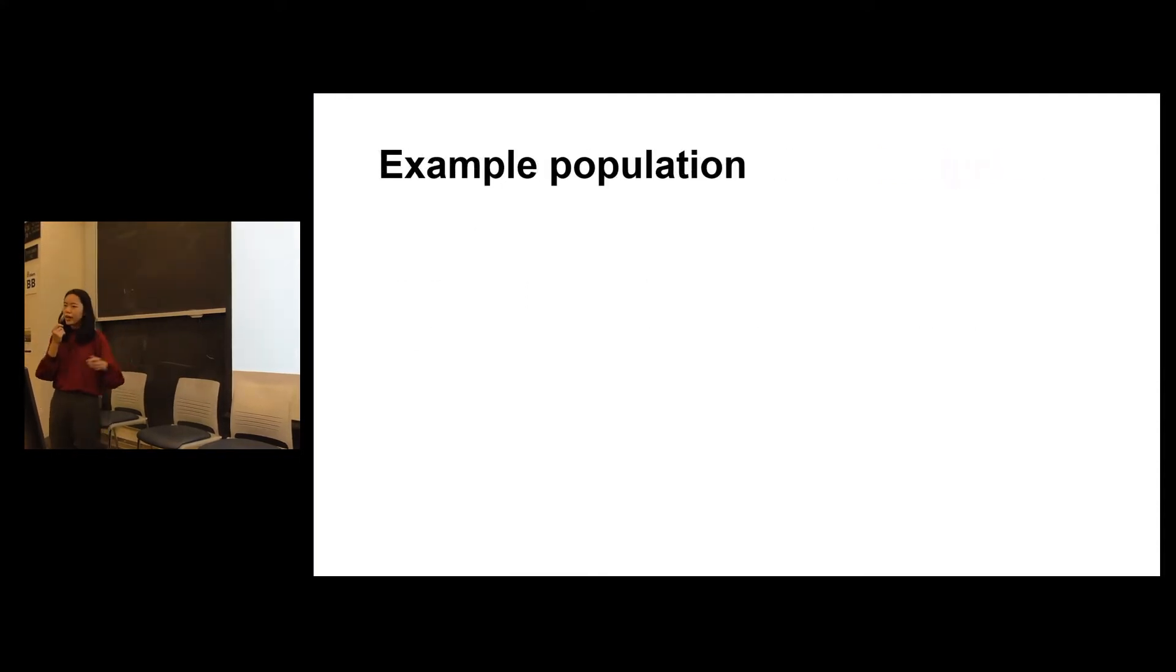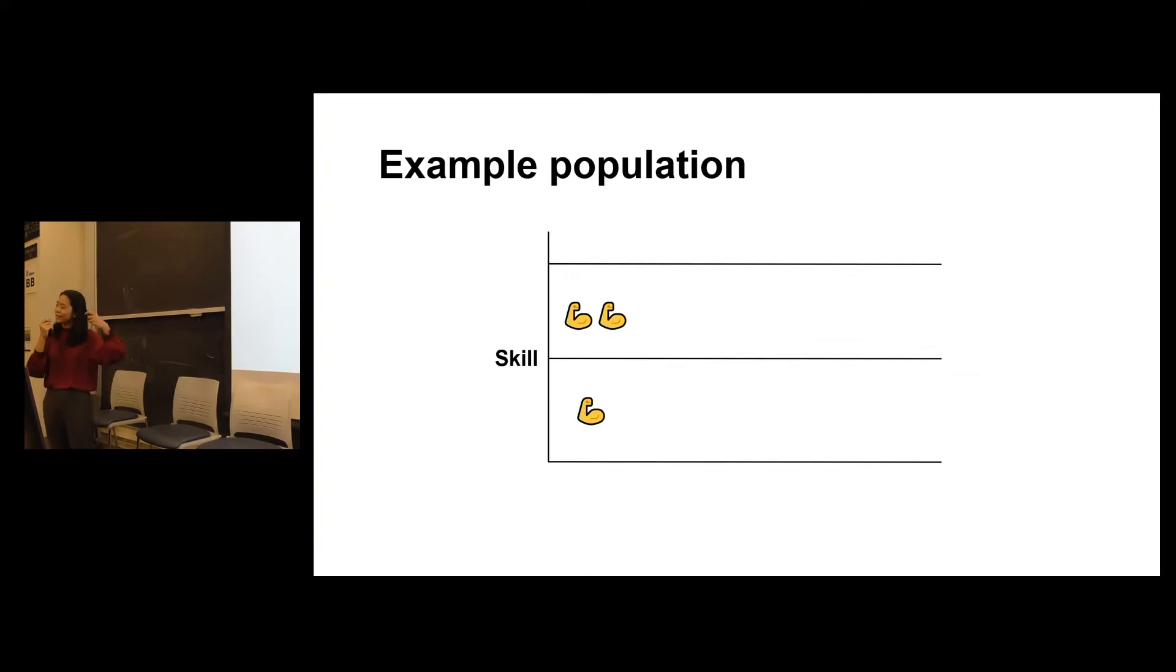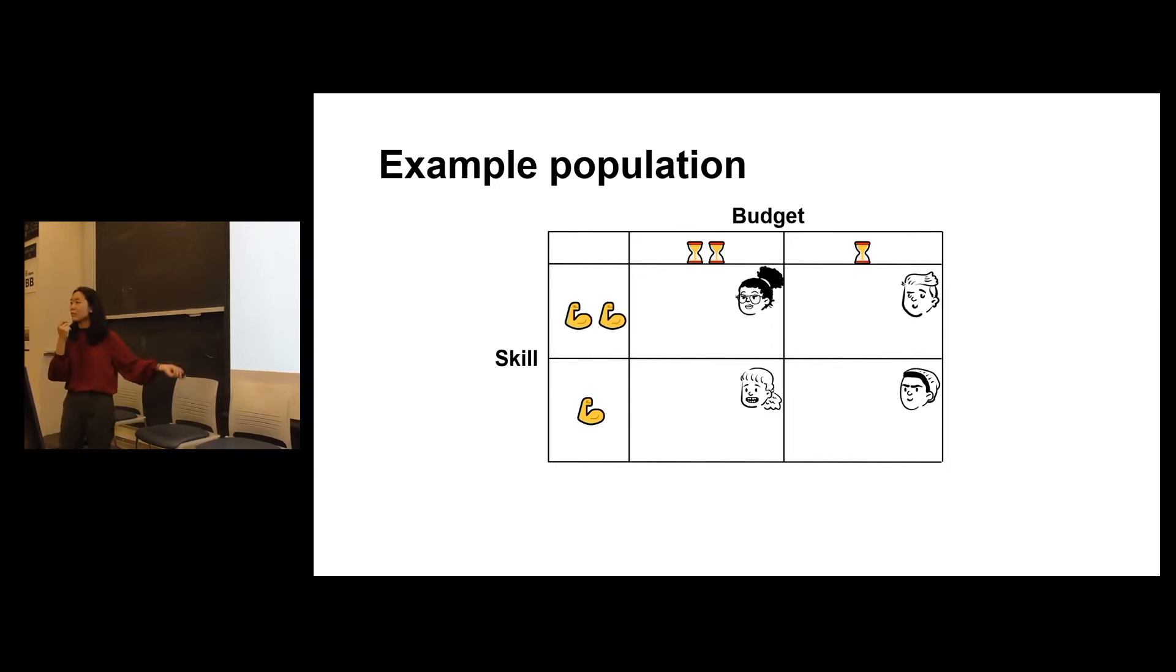For this talk, I'll just focus on this very simple population. A student either has a high skill or a low skill. A student also either has a high budget or a low budget. So this effectively gives us four types of students. And as the admissions officer for a random student, you do not know their skill. You do not know their budget.